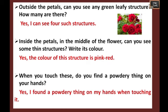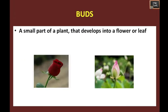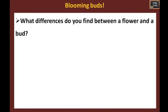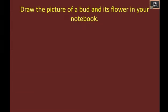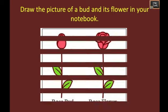Next, we are going to discuss about buds. Buds are the small part of a plant that develops into a flower or leaf. Have you seen buds on a plant? If there is any flower-bearing plant growing near your school or home, look carefully at its buds. Now choose a bud and watch it carefully. What differences do you find between a flower and a bud? A flower is bigger, open, and large, whereas a bud is smaller, closed, and pointed.